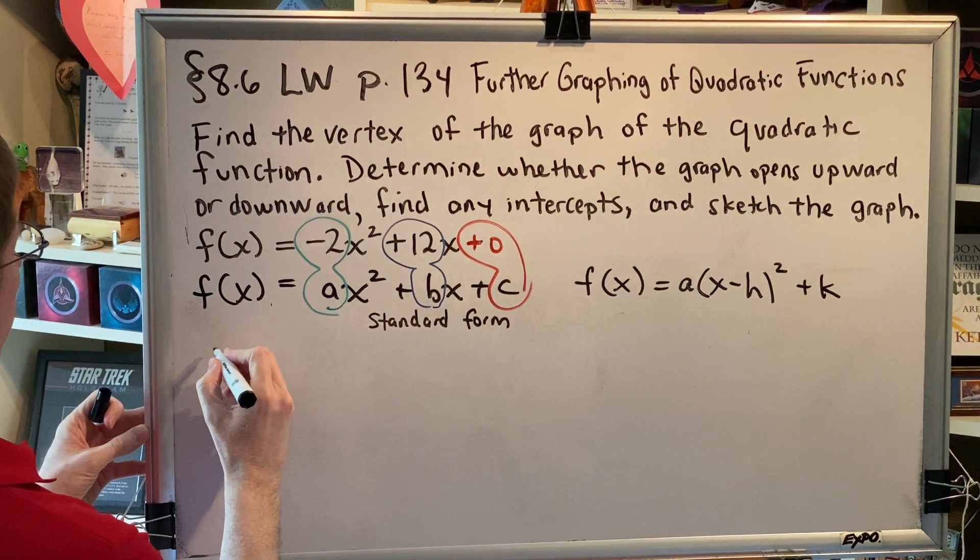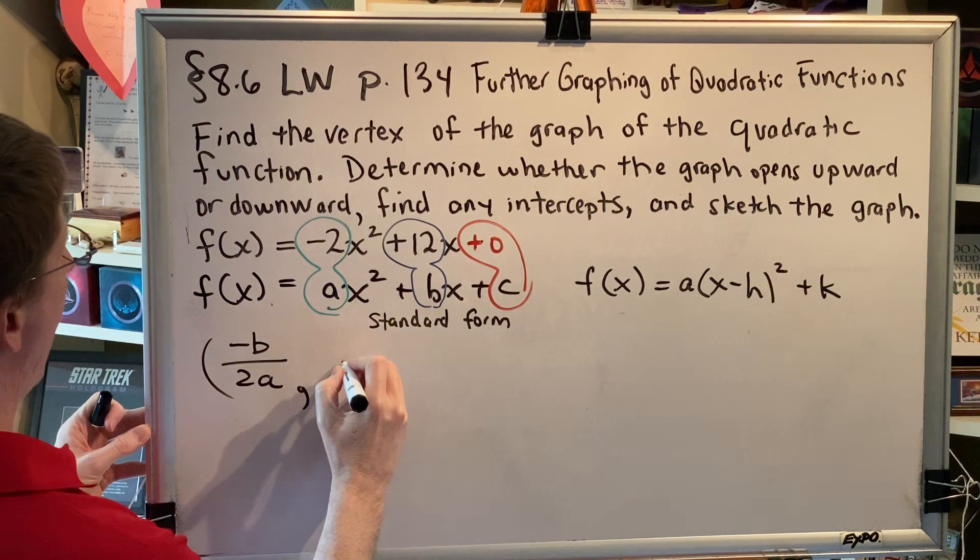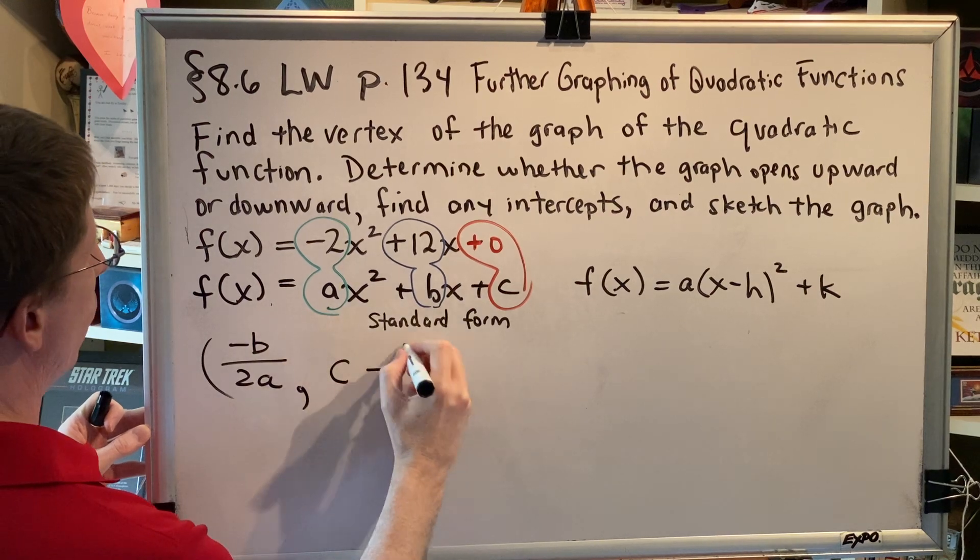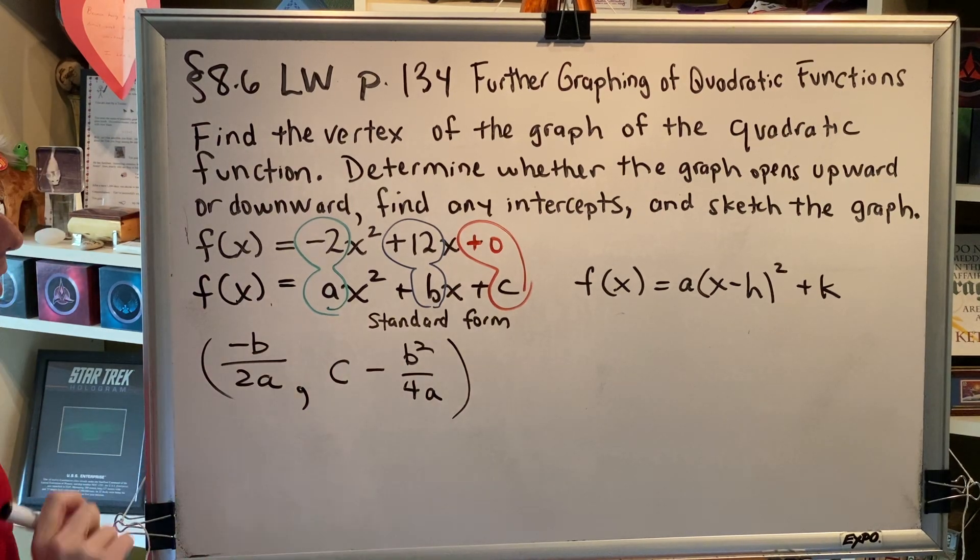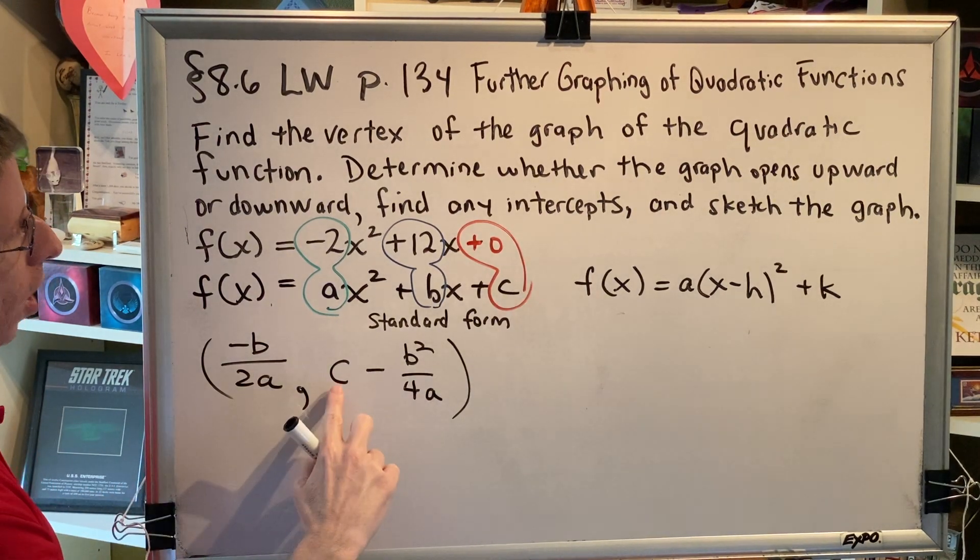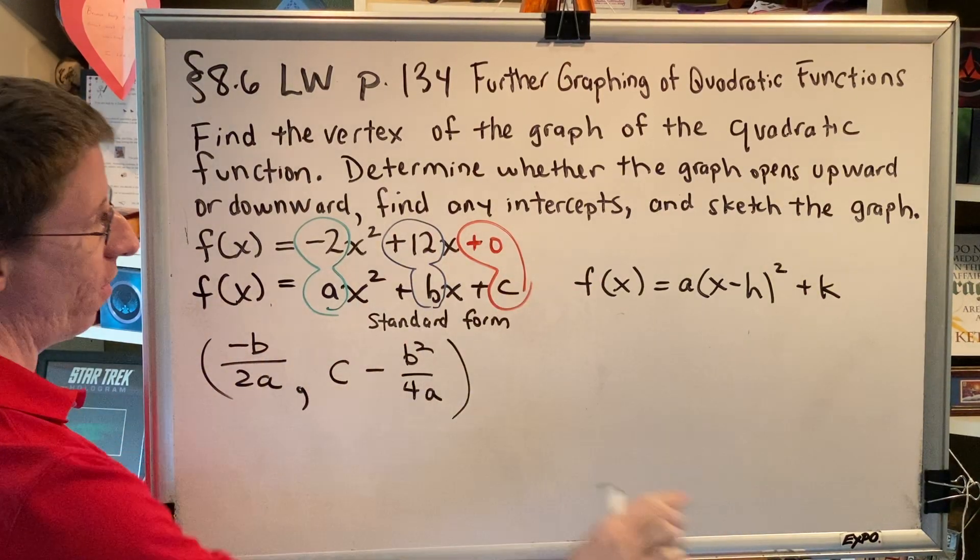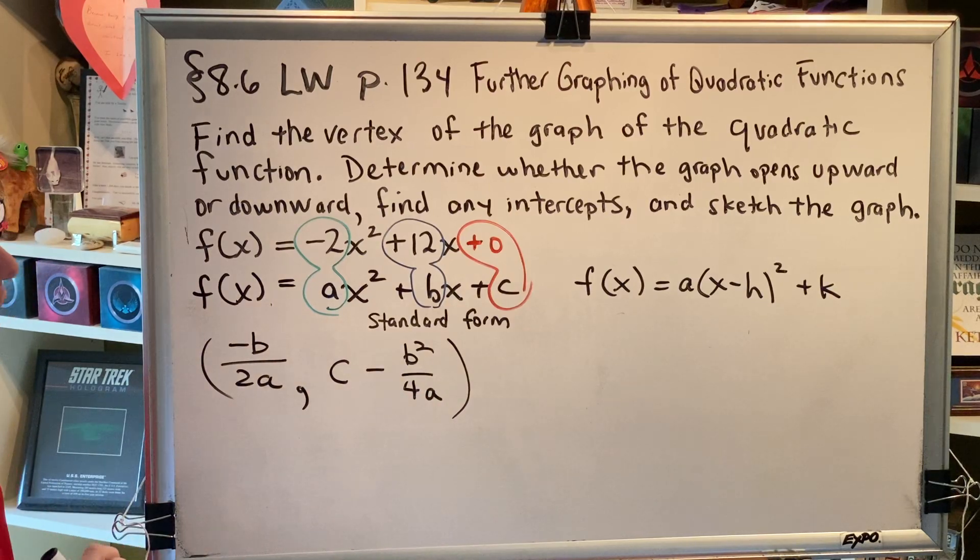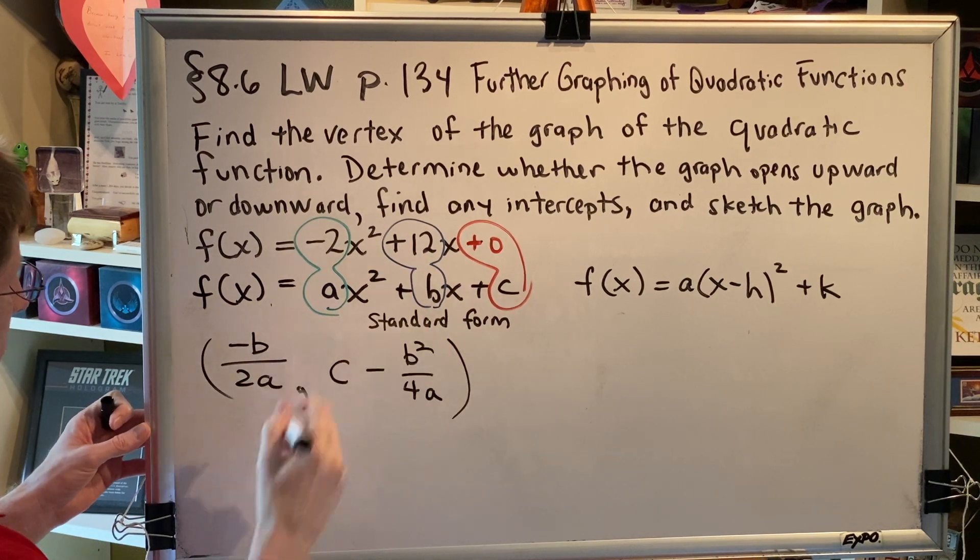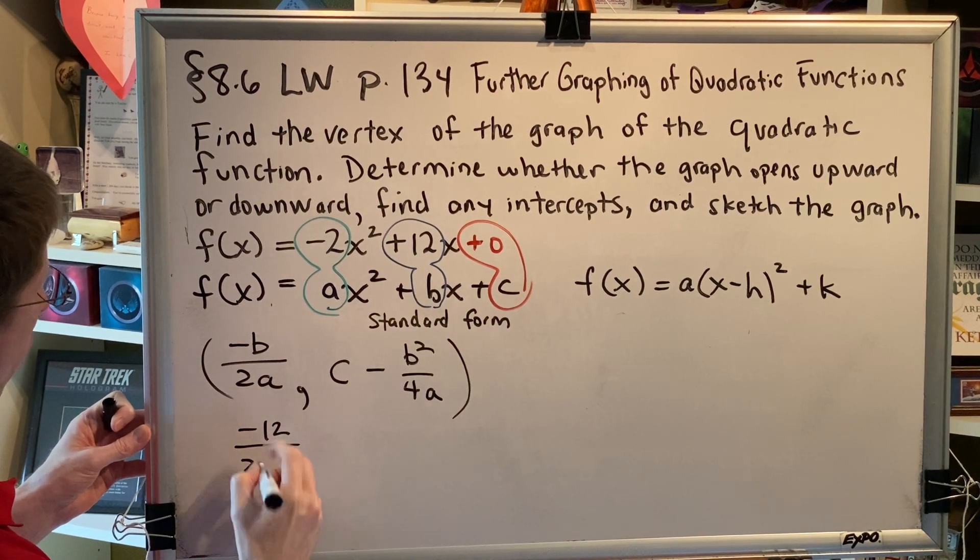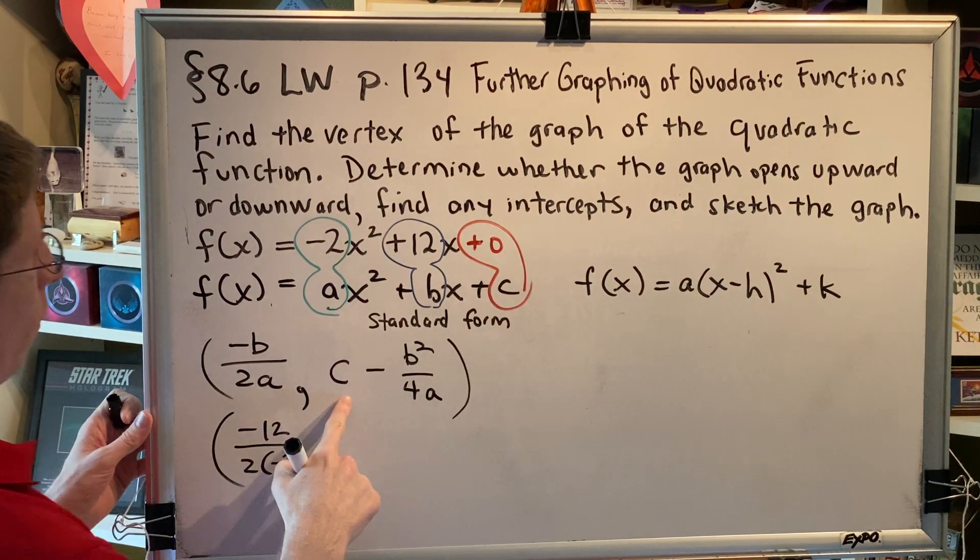So the formula for vertex is -b/(2a) for the x-coordinate, and c - (b²/(4a)) for the y-coordinate. Whenever you write this formula, be very, very careful. Do not put the c subtract in the numerator of this fraction. It's c subtract, then the fraction b²/(4a). Let's plug in what we know. So, opposite b, so that would be the opposite of positive 12, which would be negative 12, over 2 times a, so that's 2 times negative 2. There's our x-coordinate.